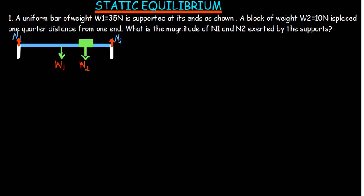A uniform bar of weight W1 which is 35 Newtons is supported at its ends as shown. A block of weight W2 which is 10 Newtons is placed one quarter distance from one end. What is the magnitude of N1 and N2 exerted by the supports?